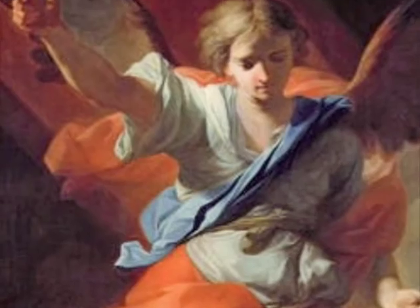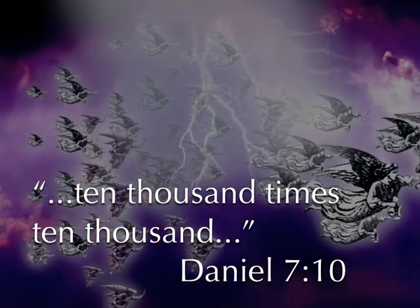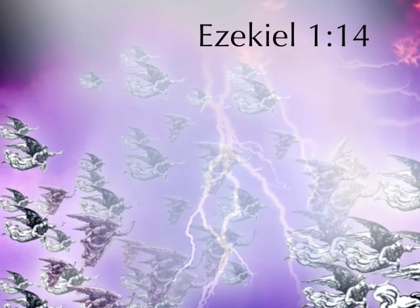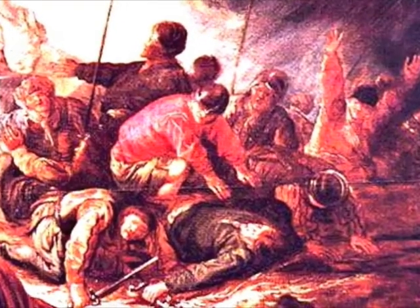Angels work with God to help bring us to salvation. The prophet Daniel saw 10,000 times 10,000 of these holy creatures. The angels are so fast and glorious that they look like a flash of lightning. The angel that came to the tomb of Jesus when Jesus was resurrected had a face like lightning, and his clothes were as white as snow. The men guarding the tomb were so afraid of the angel that they became as dead men.